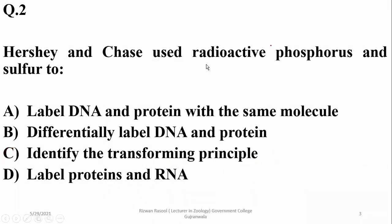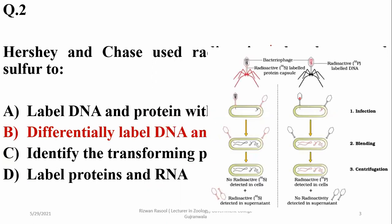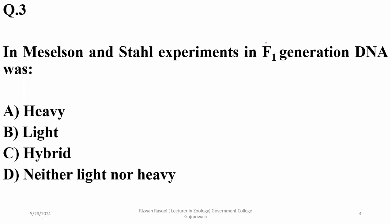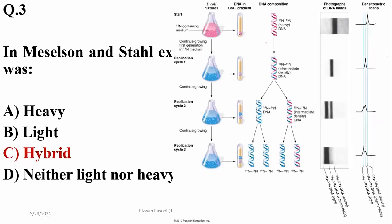Question number two: the Hershey-Chase experiment. They used radioactive phosphorus to label the DNA and sulfur to label the proteins, so beta is the right answer. T4 phages were labeled so that it could be identified which biological material is responsible for heredity. DNA was found within the cells as the hereditary material, causing transfer of information from one generation to the next. In the Meselson-Stahl experiment, F1 generation DNA was hybrid — the heavy DNA was allowed to grow in lighter medium containing N14 nitrogen, so the F1 generation had a mixture of N14 and N15, that is hybrid DNA.